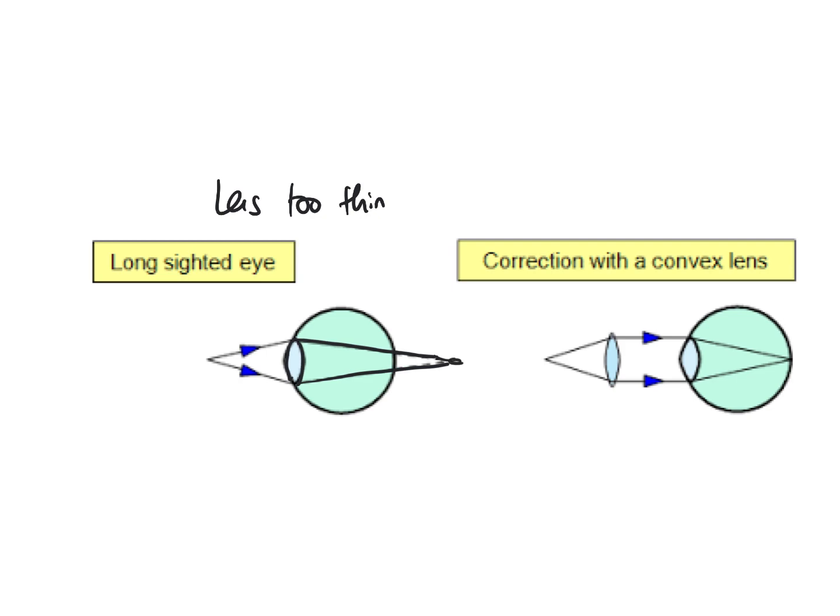So to fix that, we need to do some more focusing before. What we do is we use a convex lens. That brings the light rays or converges them together. The light rays come in, starts the converging, and then the thinner lens brings them together at the right point. So remember that long-sighted, we use a convex lens.